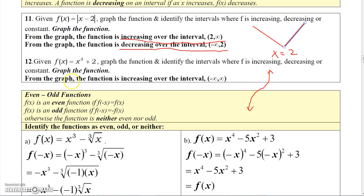This next graph, x cubed plus 2 — I drew kind of a rough picture of it here — but if you look at this graph, as you move left to right, this graph is always increasing. So we would say this graph is increasing over its entire domain, which is actually negative infinity to infinity.